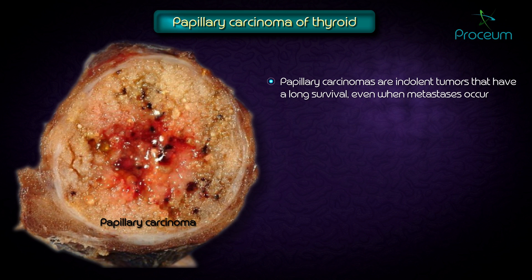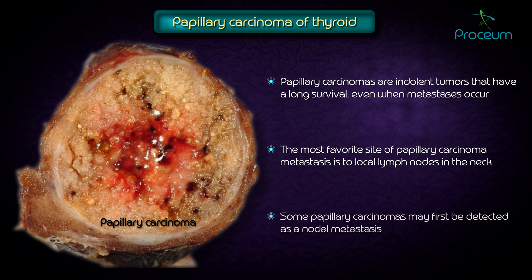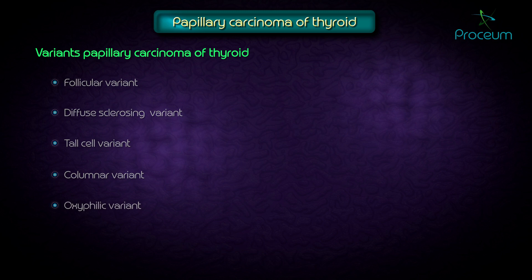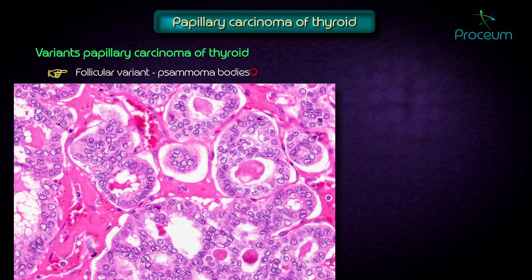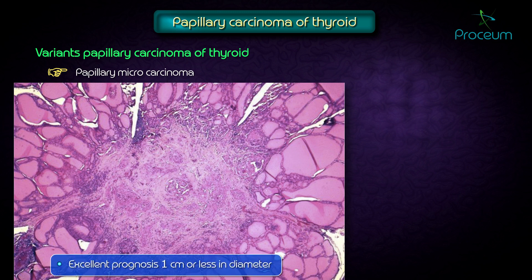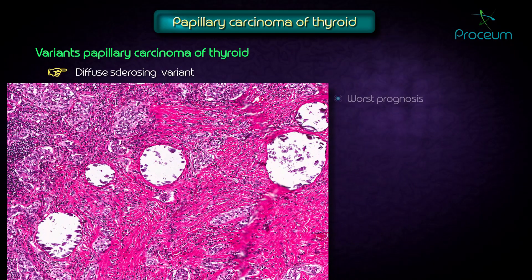Papillary carcinomas are endocrine tumors with very long survival even when metastasis occurs. The most common site for papillary carcinoma metastasis is the local lymph nodes in the neck. Some papillary carcinomas may first be detected as nodal metastasis. There are different variants: the first is the follicular variant, where psammoma bodies are seen. The second is papillary microcarcinoma, which has an excellent prognosis because the tumor diameter is one centimeter or less.